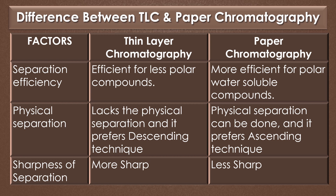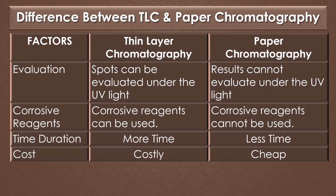Sharpness of separation. Separation by TLC is more sharp, and the separation by paper chromatography is less sharp. Evaluation. In thin layer chromatography, spots can be evaluated under UV light, but in paper chromatography, results cannot be evaluated under UV light.